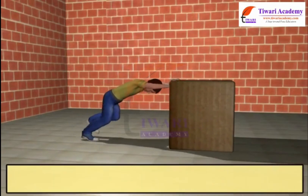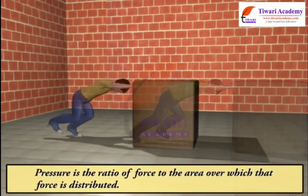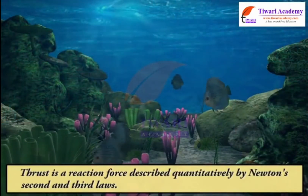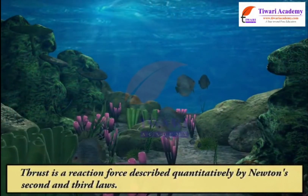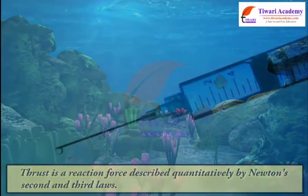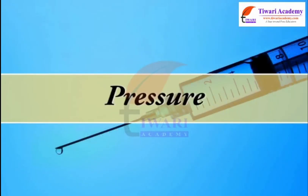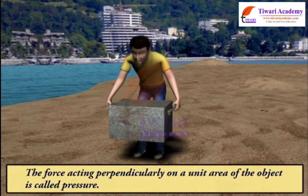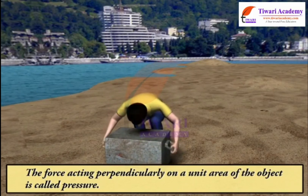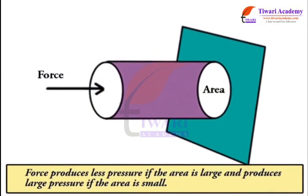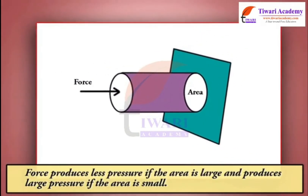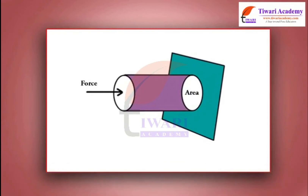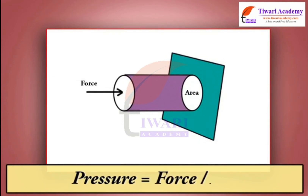Pressure is the ratio of force to the area over which that force is distributed. Thrust is a reaction force described quantitatively by Newton's second and third laws. The force acting perpendicularly on a unit area of an object is called pressure. Force produces less pressure if the area is large and produces greater pressure if the area is small. Pressure is equal to force upon area.